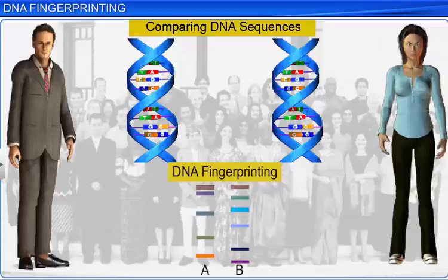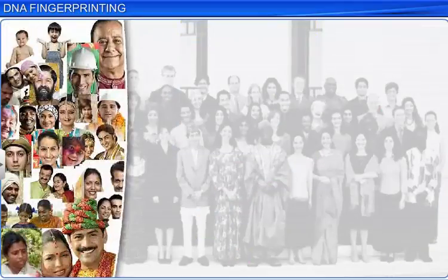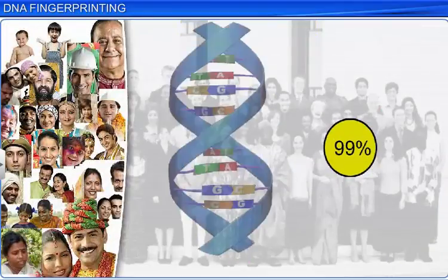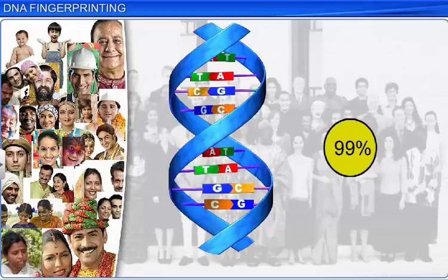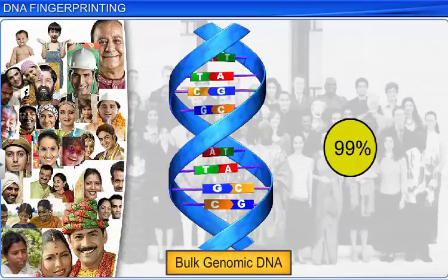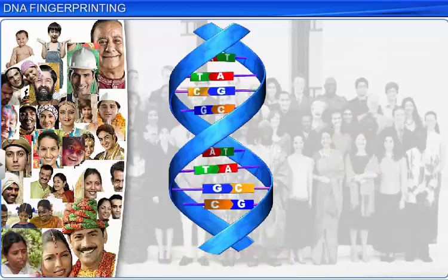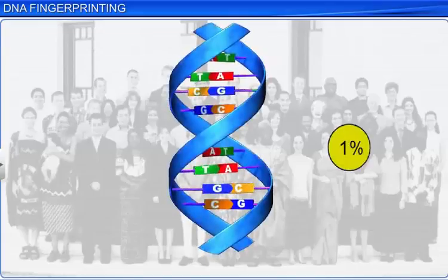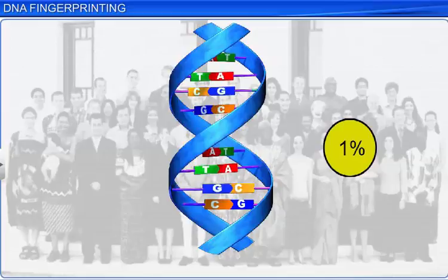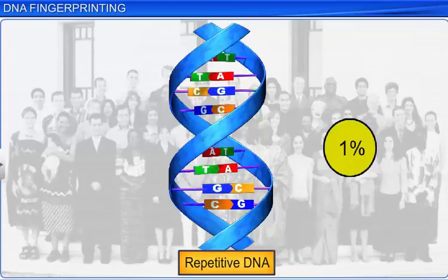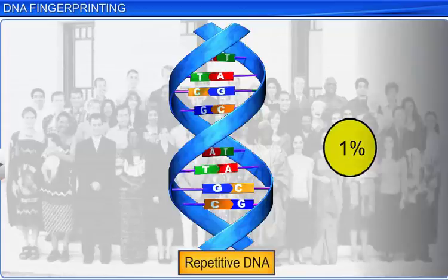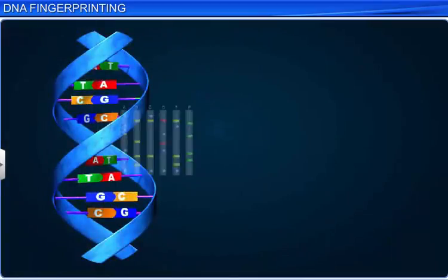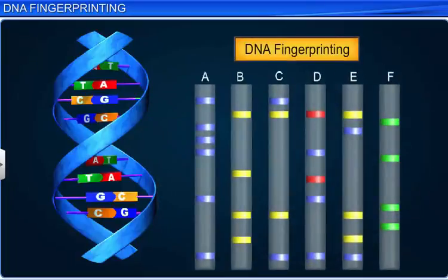In human beings, 99% of DNA base sequences are identical and are known as the bulk genomic DNA. The remaining 1% of DNA base sequences differ and are present as a small stretch of repeated sequences known as repetitive DNA. DNA fingerprinting identifies the differences in this region.